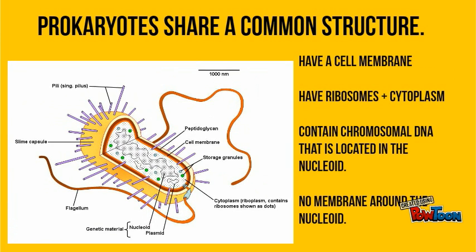Prokaryotes share a common structure. They all have a cell membrane, ribosomes, and cytoplasm. They also contain chromosomal DNA that is located in the nucleoid, but the nucleoid is not surrounded by a membrane.